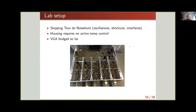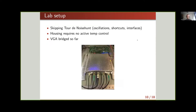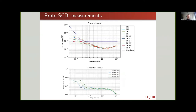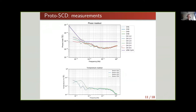I'll spare you the pain of the debugging and just show the results. The prototype has a nice housing and no longer requires active temperature control, unlike the elegant breadboard. In the measurements shown, the new VGA is bridged for now — we first wanted to verify the previous topology with the new space-flight components. The preliminary final measurement results show the performance requirements are nicely met, except for one small anomaly. This is a big milestone for us.